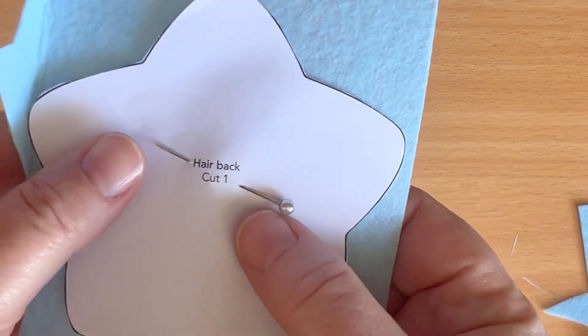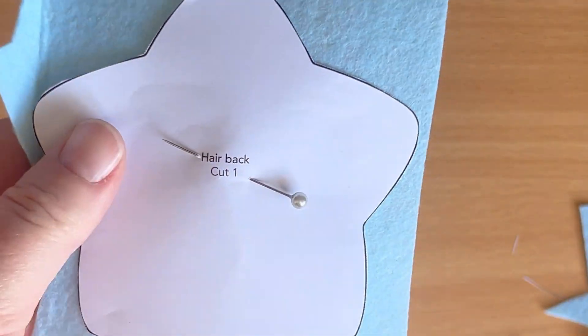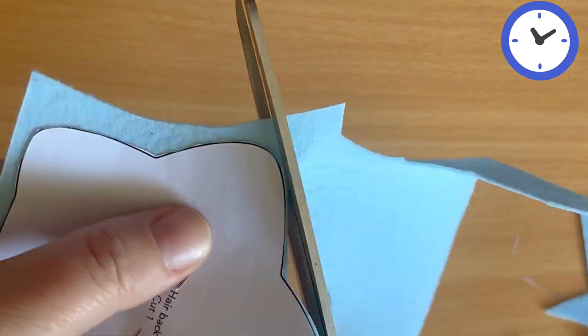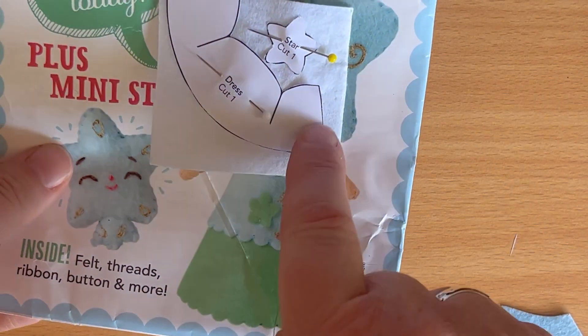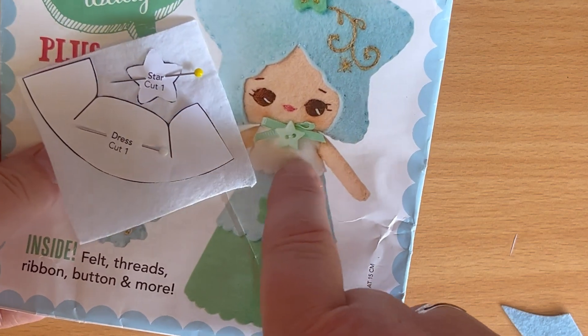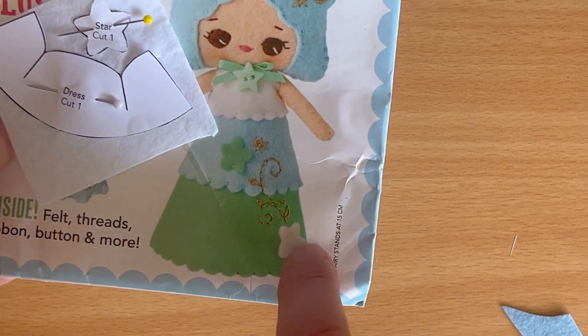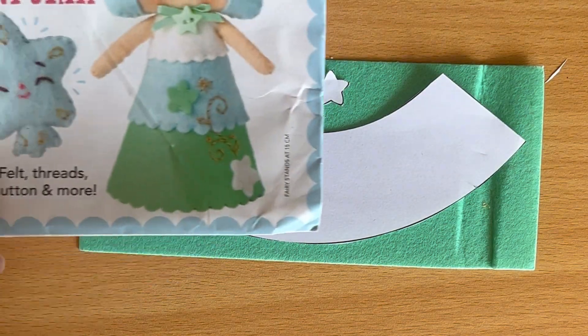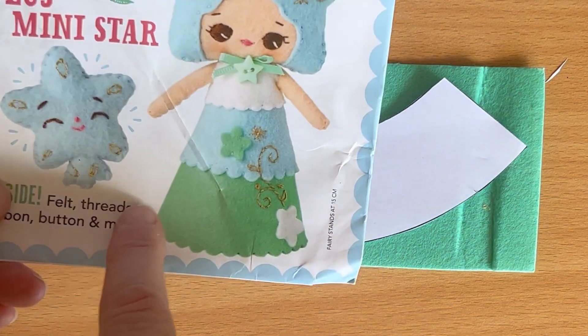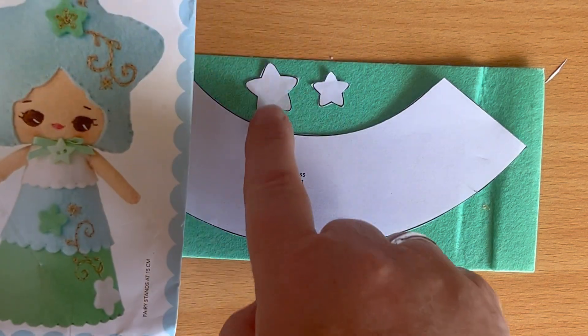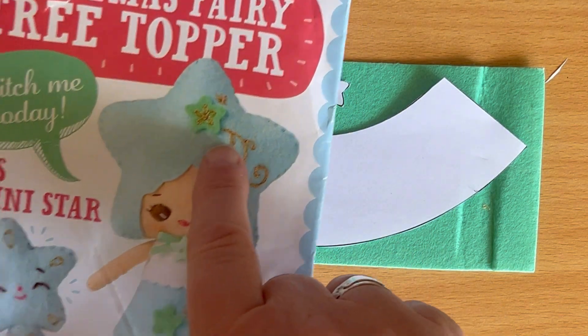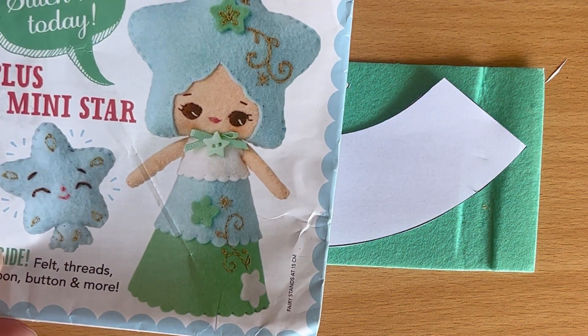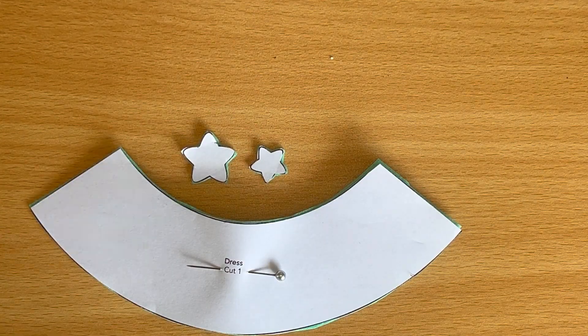Don't forget to cut the second one out, this will be the back. Sticking with the blue, we're going to now cut out the back of the hair also. Moving on to the white shape, this is the top of the dress and one of the stars. Next we're going to use the lovely green color to do the bottom part of the dress and two of the stars. You can see one in the hair and one in the middle of the dress.